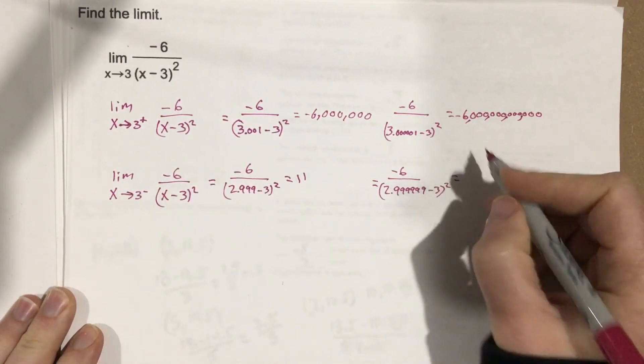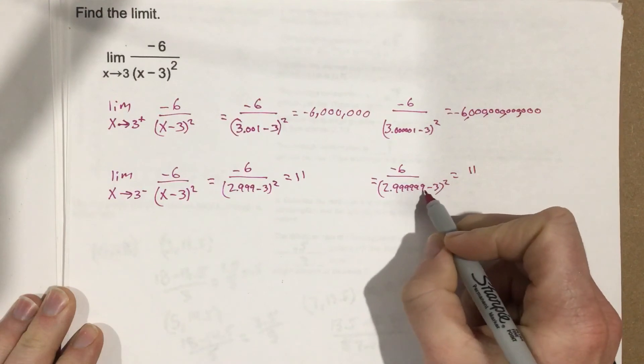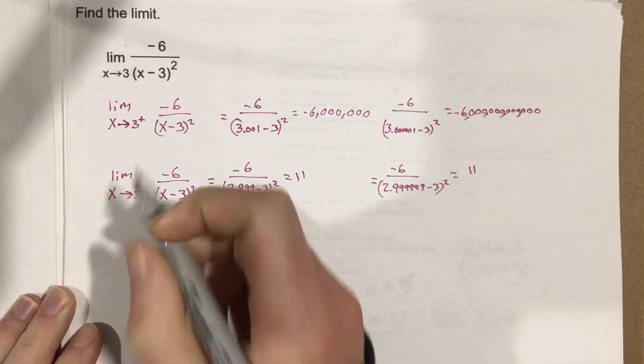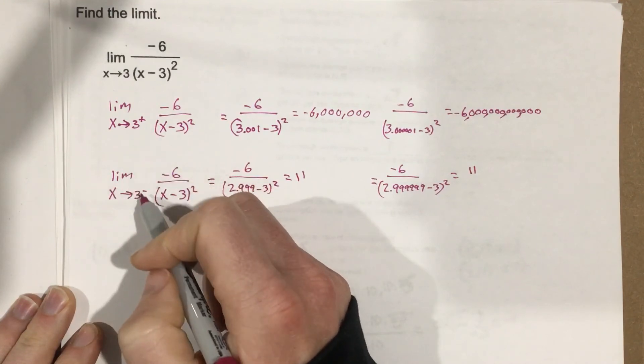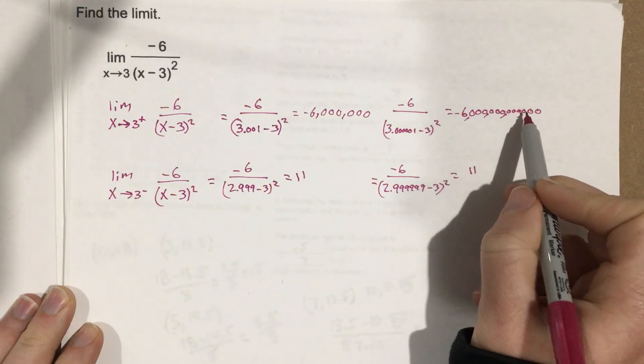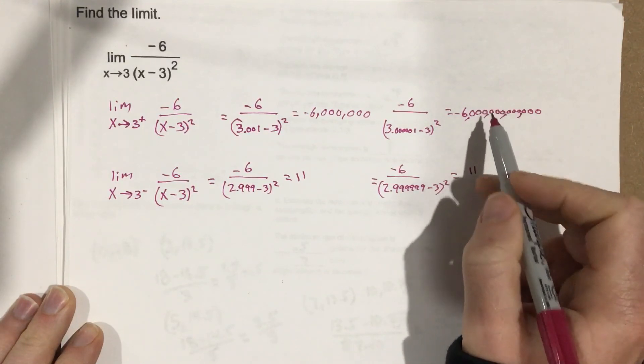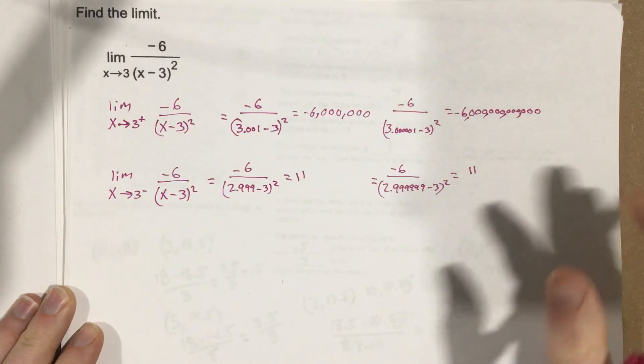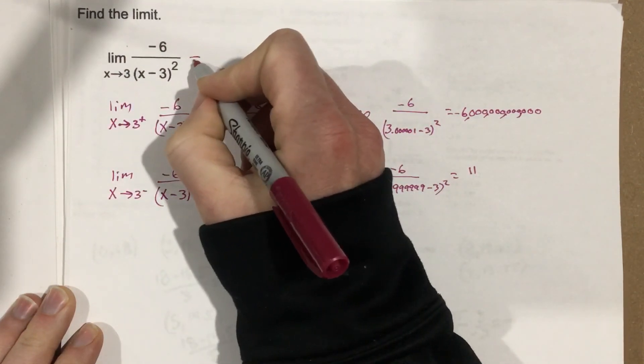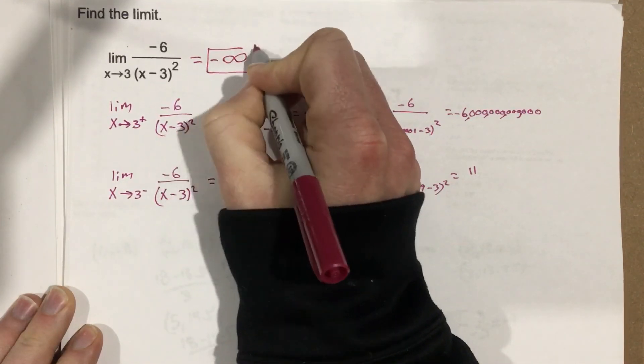That means the limit will be the same from both sides, because we get the same number when it's squared. We're getting a number that's really close to negative infinity. So the limit as x approaches 3 for this function equals negative infinity, because we keep getting smaller and smaller values.